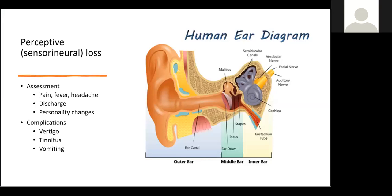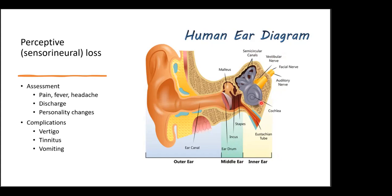Now let's look at perceptive or sensorineural hearing loss. Perceptive deafness or sensorineural hearing loss is caused by malformations or damage to the inner ear or the auditory nerve. Any damage to the eustachian tube, the cochlea, the semicircular canals, the vestibular nerve, the facial nerve, or the auditory nerve would be your sensorineural hearing loss.